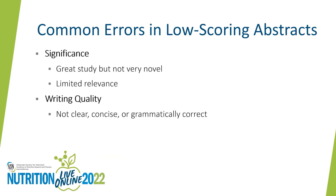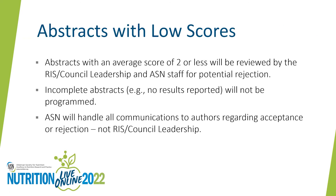Regarding significance, the abstract might describe a great study but one that is not very novel or has limited impact, which can affect the significance score. You may also find abstracts that are not clearly written or have typographical or other grammatical errors. Abstracts with an average score of 2 or less will be reviewed by the RIS and council chairs and ASN staff for potential rejection. Incomplete abstracts — for example, those with no results reported — will not be programmed. ASN will handle all communications to authors regarding acceptance or rejection.